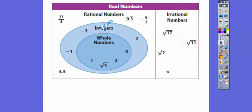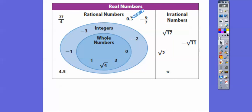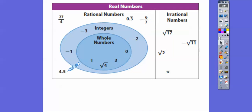Rational numbers include any fraction that can't be reduced, any repeating decimal like 0.33333 — remember this was one-third — and here's a negative fraction. As long as the numerator and denominator are both integers, and here's a terminating decimal where it stops, like 4.5.